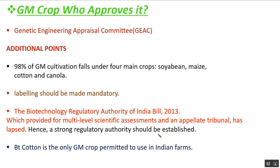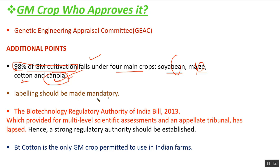The body that approves genetically modified crops is the Genetic Engineering Appraisal Committee (GEAC). Notably, 98 percent of GM cultivation falls under four main crops: soybean, maize, cotton, and canola — mostly from Canada. Labeling of GM products should be made mandatory so consumers know what they are purchasing. The Biotechnology Regulatory Authority of India (BRAI) Bill, introduced in Parliament in 2013, which provided multi-level scientific assessment and appellate tribunal, has lapsed — so a strong regulatory authority needs to be established.